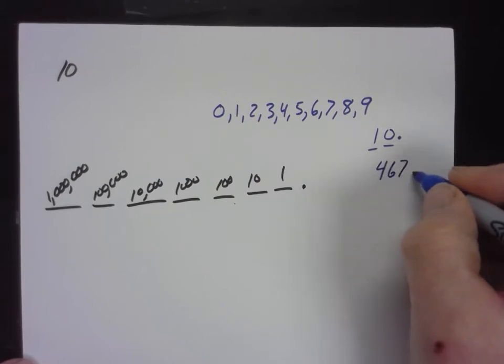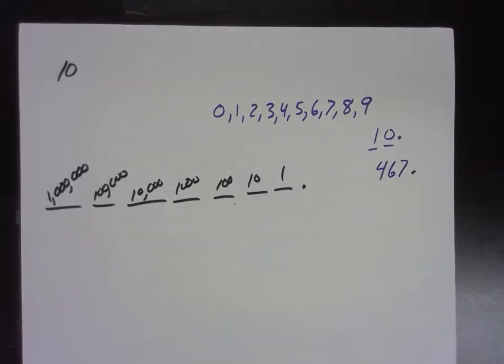So you guys are very used to the decimal system. When you see something like this, you understand that we have 4 100's and 6 10's and 7 1's.